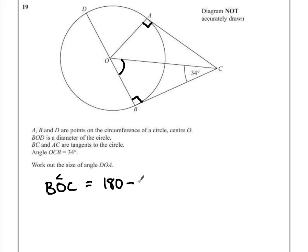We can take away the right angle and take away 34 degrees, which leaves us with 56 degrees. So that angle there is 56.